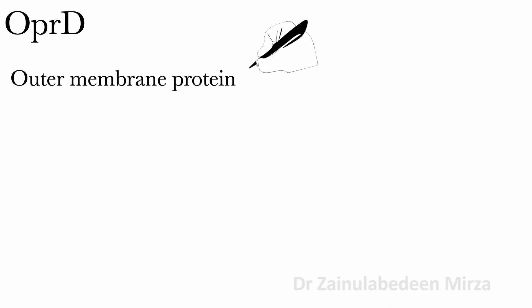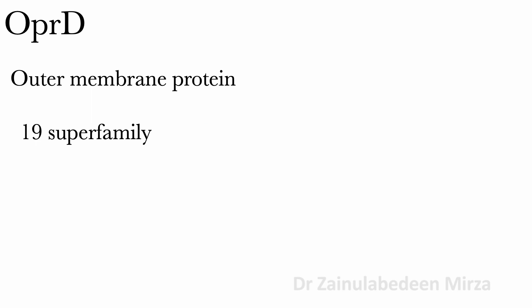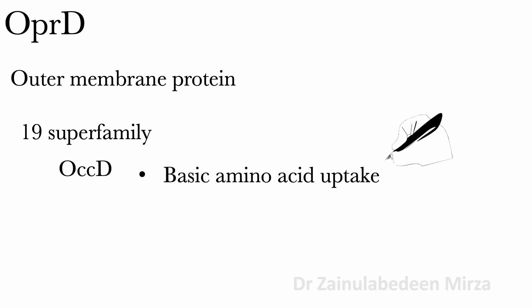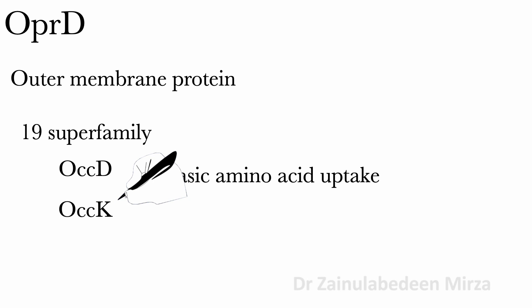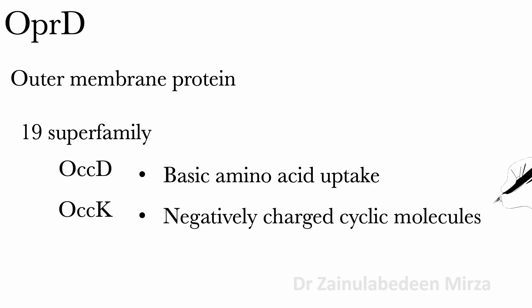OPRD is another outer membrane protein of Pseudomonas aeruginosa that has 19 superfamily members sharing a high degree of similarity. These members split into two groups: OccD, which involves basic amino acid uptake, and OccK, which is for negatively charged cyclic molecules. OPRD is a protein involved in the entry of carbapenem antibiotics and the transportation of basic amino acids.